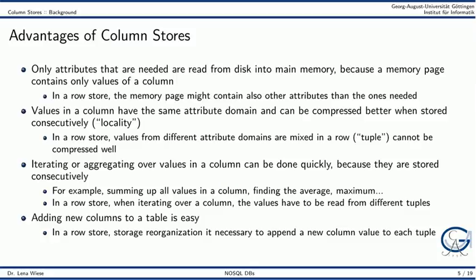Columnar storage has several advantages. First of all, only those columns that are actually accessed by a query have to be fetched from disk into main memory. As we have seen in our example, values in a column have the same attribute domain, which means they can be compressed a lot better.